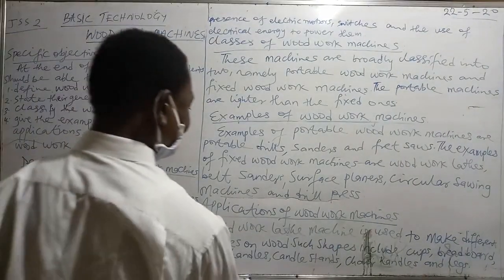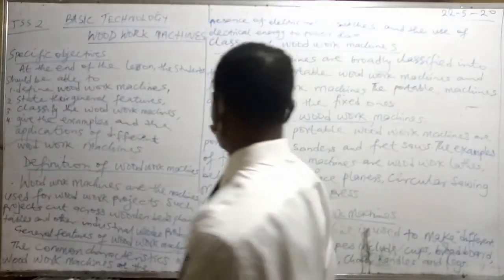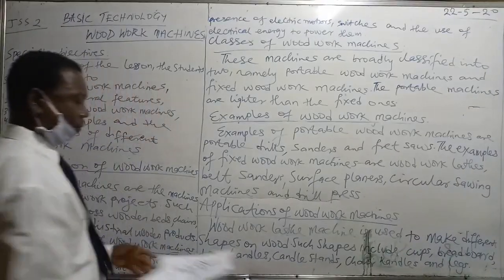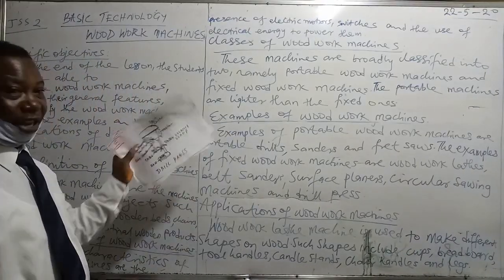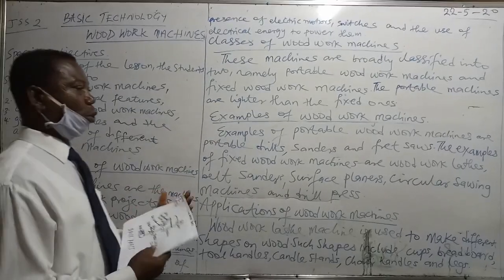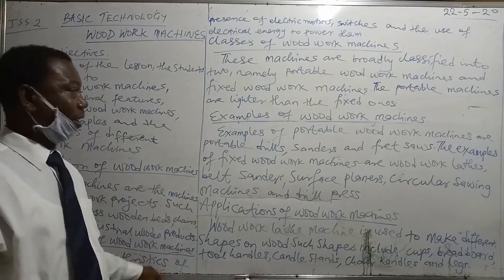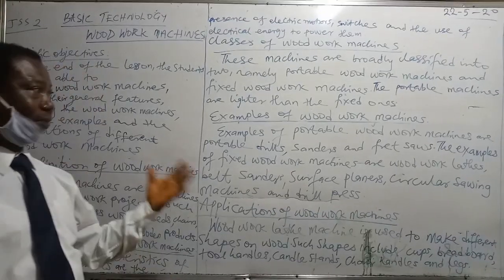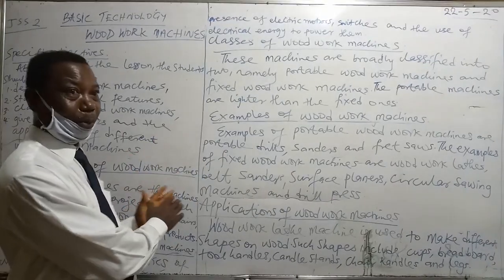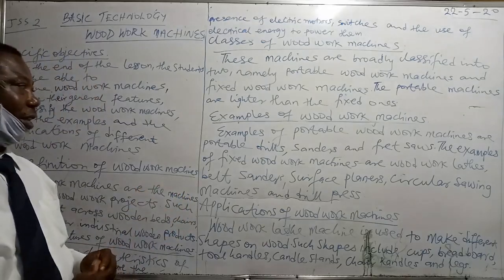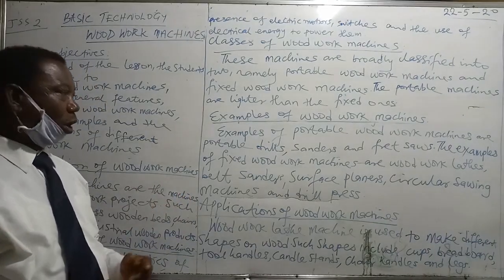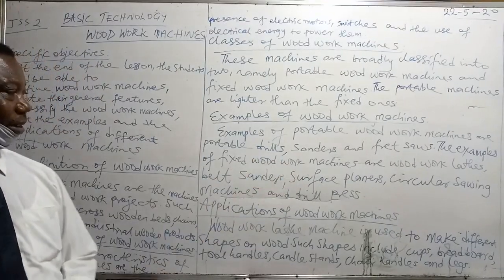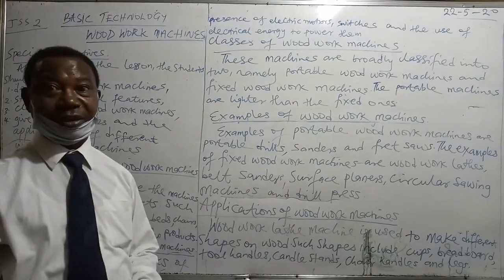We move to the next subheading — this time we are talking about the examples of woodwork machines. Having shown you the parts, the examples under portable woodwork machines include the portable power drills, the sanders, and the fret saw. The examples of the fixed ones include the woodwork lathe, belt sanders, surface planers, circular saws, and the drill press.